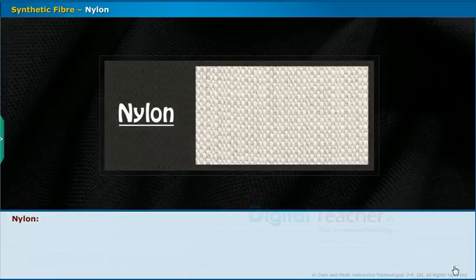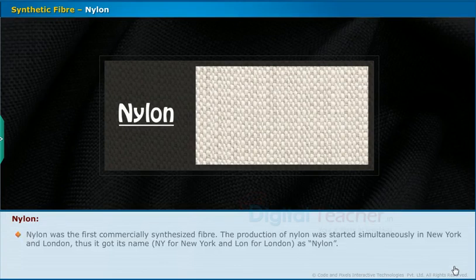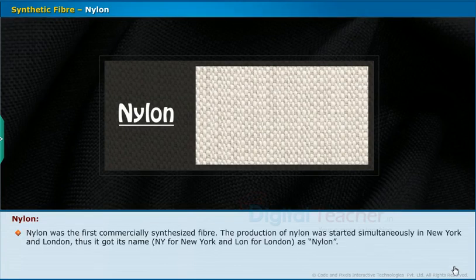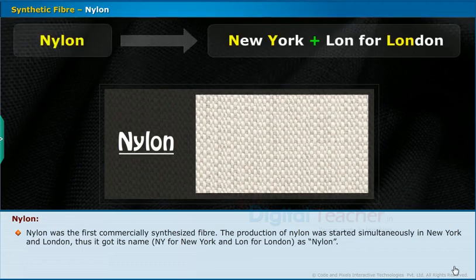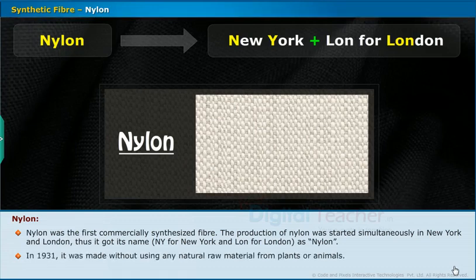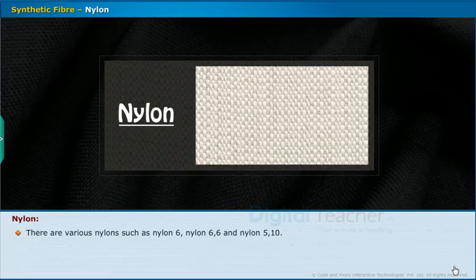Now we are going to study about nylon, which is a type of synthetic fiber. Nylon was the first commercially synthesized fiber. Its production was started simultaneously in New York and London, and thus it got its name — NY for New York and LON for London — as nylon. In 1931, it was made without using any natural raw material from plants or animals. There are various nylons such as nylon 6, nylon 6,6 and nylon 5,10.